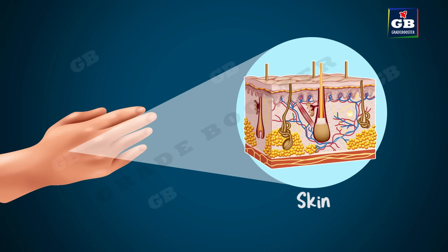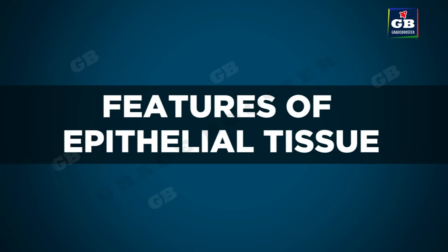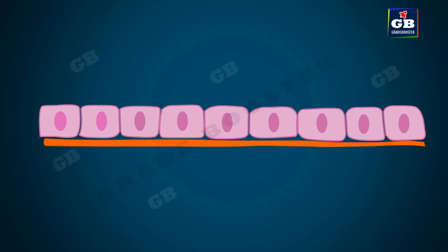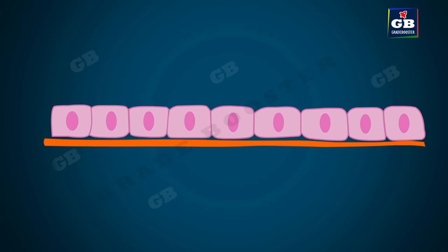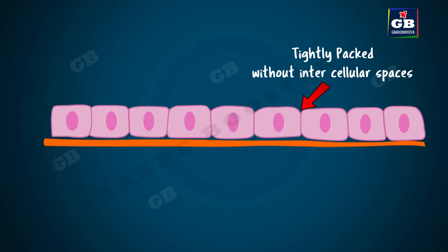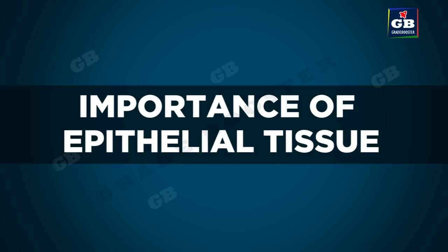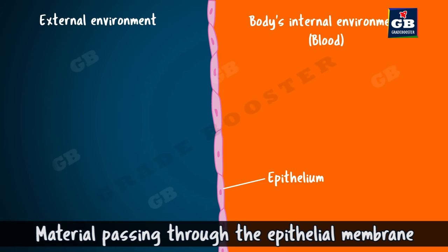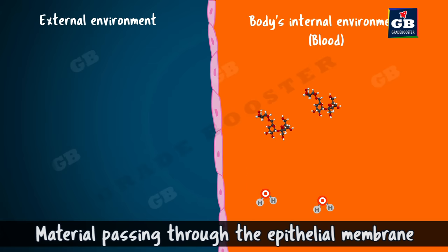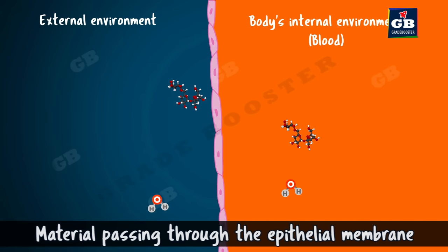Epithelial tissue is a continuous sheet of cells. They are tightly packed without any intercellular spaces. The cementing material between the cells is also very less. Epithelial tissue is separated from the underlying tissue by an extracellular fibrous basement membrane. Anything from the outer atmosphere that has to enter our blood, or anything that has to leave our blood, must pass through the epithelium at least once.